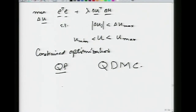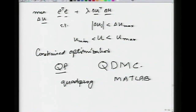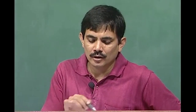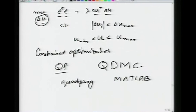One function I use quite often is quadprog in MATLAB, which solves quadratic programming problems. There is a lot of theory that goes into it, but the key point is: I am trying to figure out the best control moves — what should my future set of delta-u's be — so that my objective function is minimized. The objective function tries to minimize the deviation from the reference trajectory and the control effort. You want y to go as close as possible to the reference trajectory without too much control effort.